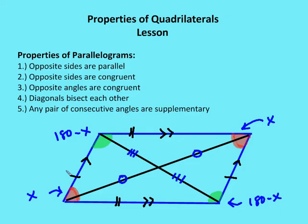I've marked up the diagram — the left and right sides of the parallelogram are congruent, and the top and bottom of the figure are also congruent. We also know that the opposite angles are congruent. The red angles in the bottom-left and upper-right corners are congruent, and the green angles in the upper-left and bottom-right corners are congruent.